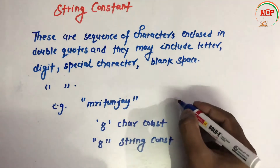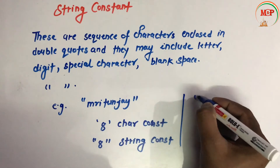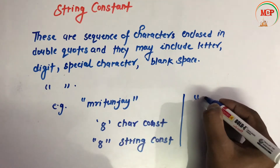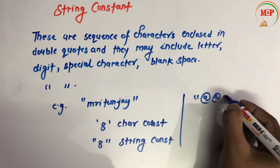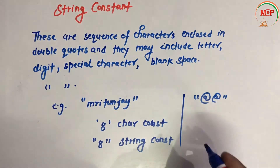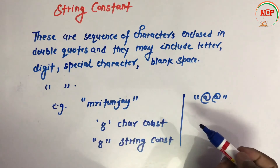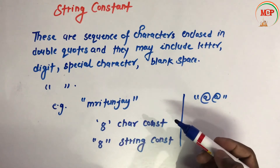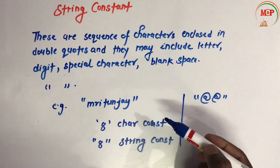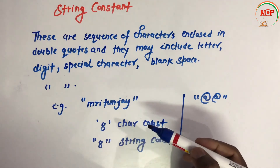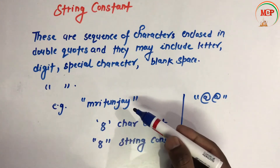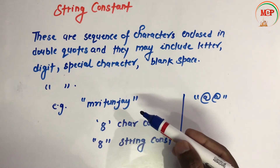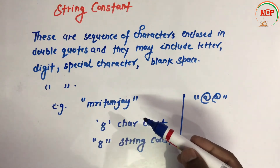For example, a name written in double inverted commas is a string constant. Special characters like '@' written in double inverted commas are also a string constant. String constant does not have an ASCII value, but a character constant has a particular ASCII value.